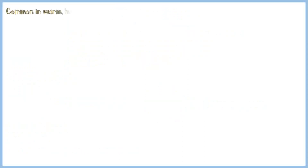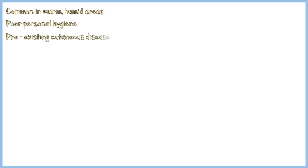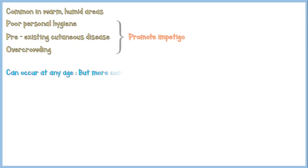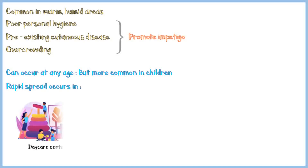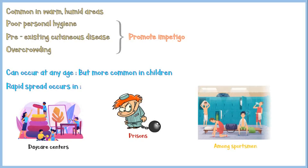Impetigo commonly occurs in warm, humid areas. In addition, poor personal hygiene, pre-existing cutaneous disease, and overcrowding may also promote development of impetigo. It can occur at any age, but is more common in children. Rapid spread and outbreaks occur in places where people gather in large numbers, such as daycare centers, prisons, and among sportsmen.